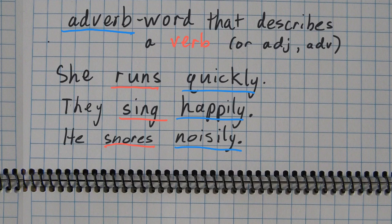The adverbs here all describe the verbs. And you can tell, not all adverbs but many, many adverbs end in -ly. Quickly describes how she runs. Happily describes how they sing. Noisily describes how he snores. So these adverbs are describing the verbs here, and you can see how that works.